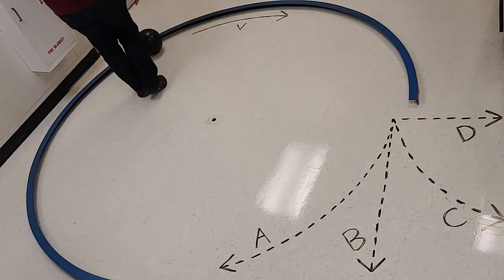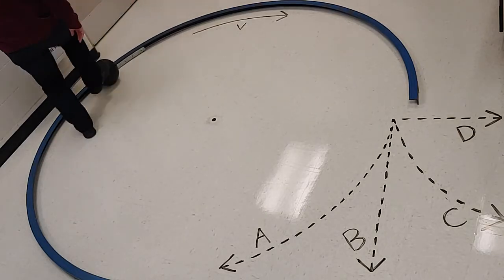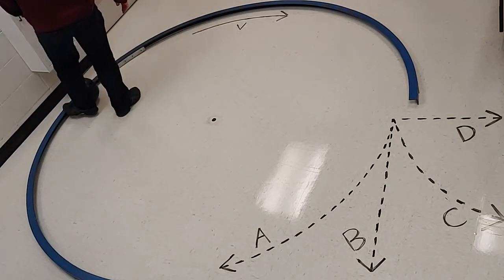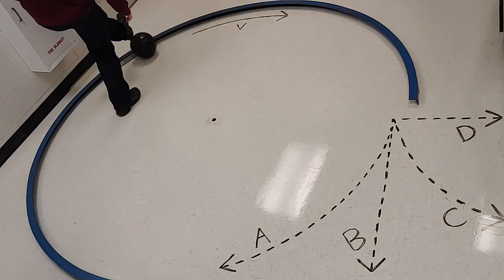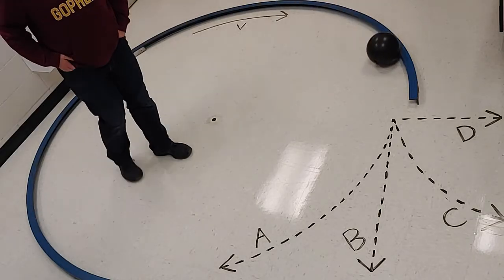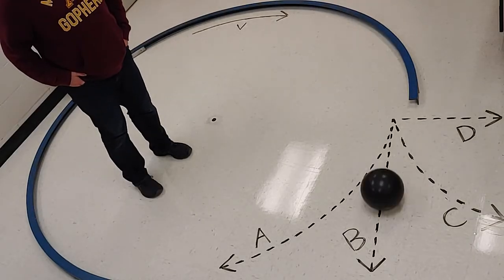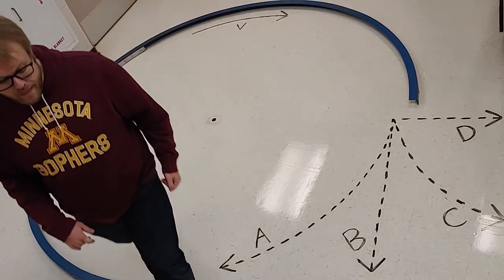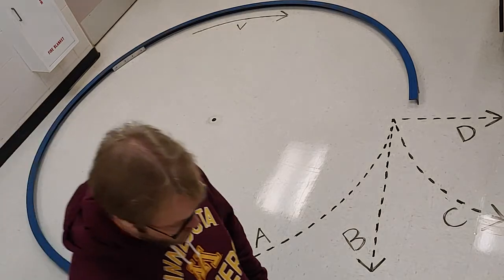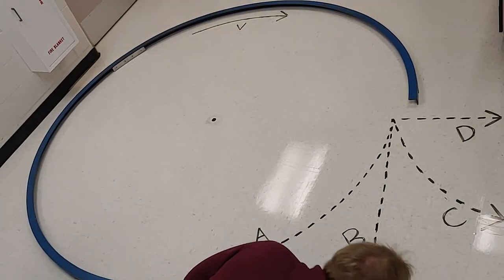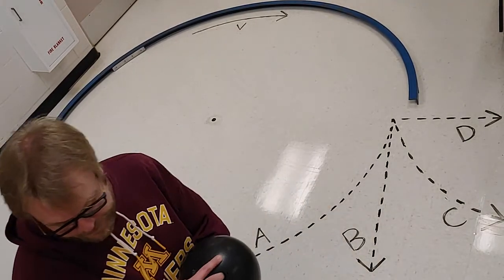Let's give the bowling ball a kick and see what it does. Going along the edge of the ring — it follows path B, the straight line. So we need to talk about why that is.